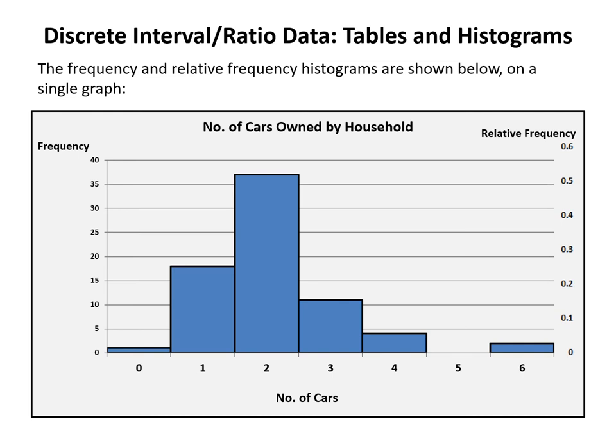This slide shows the combined frequency and relative frequency histogram for the household car ownership survey, where the heights of the bars reflect both the frequencies and relative frequencies.